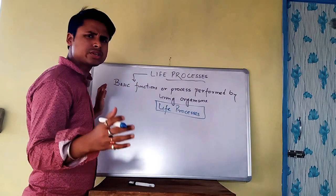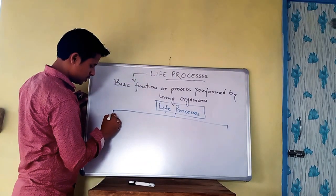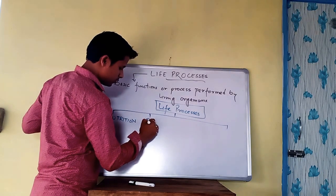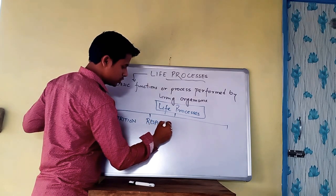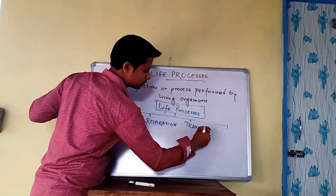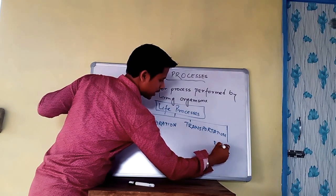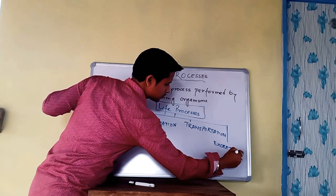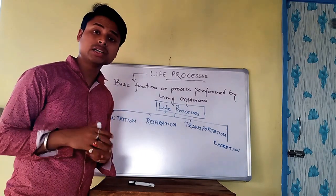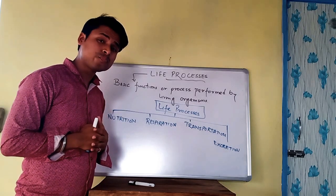There are different distinguished life processes. The first one is nutrition, then respiration, then transportation, and then the excretion process. So nutrition, respiration, transportation, and excretion are broadly divided as the different life processes which are happening inside us.